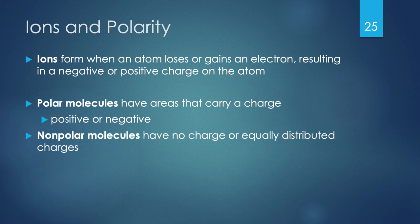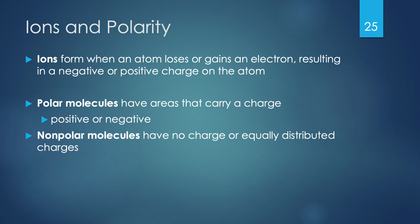Ions form when an atom loses or gains an electron. Normally an atom is neutrally charged, but when atoms interact, they can lose, gain, or share an electron. When they lose or gain an electron, the charge on the atom changes to either positive or negative. Molecules — two or more elements together — can also carry a charge; if they do, that's a polar molecule because it has areas that carry a charge. Non-polar molecules have no charge whatsoever or have equally distributed charges throughout.